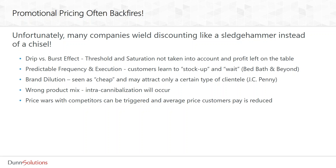Unfortunately, many companies overlook the limitations of discounting or promotional pricing, and they end up losing money in the long run. Here are the most common reasons. The drip versus the burst effect: companies have a hard time estimating consumer response to pricing, and they struggle with two concepts — the threshold and the saturation. There's often a minimum level of discount below which consumers don't really get excited and sales increase very slowly, if at all. And that's the threshold. Then there is a level of discount above which sales flatten or don't grow as much because there's only so much that people can buy — and that's the saturation.